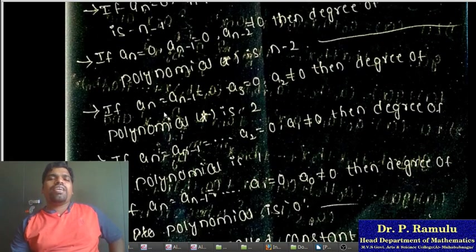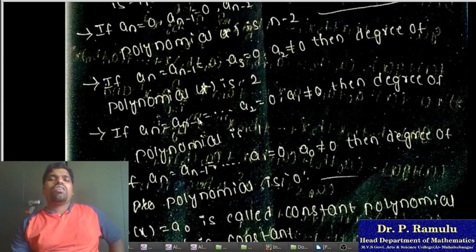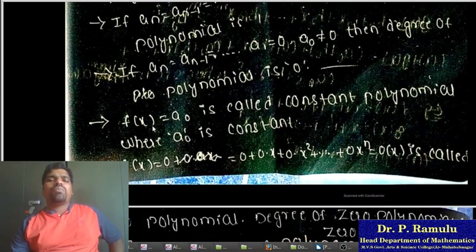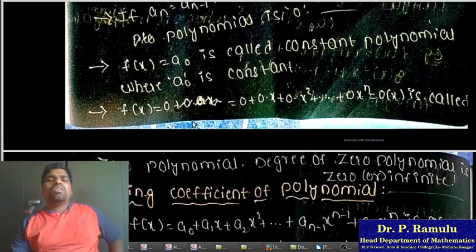Similarly, if coefficients from a_n down to a_3 are 0 but a_2 is not equal to 0, the degree of polynomial is called 2. If a_2 equals 0 but a_1 is not equal to 0, the degree of polynomial is 1. If all are 0 except a_0, then the degree of polynomial is 0. That means f(x) = a_0 is called a constant polynomial.